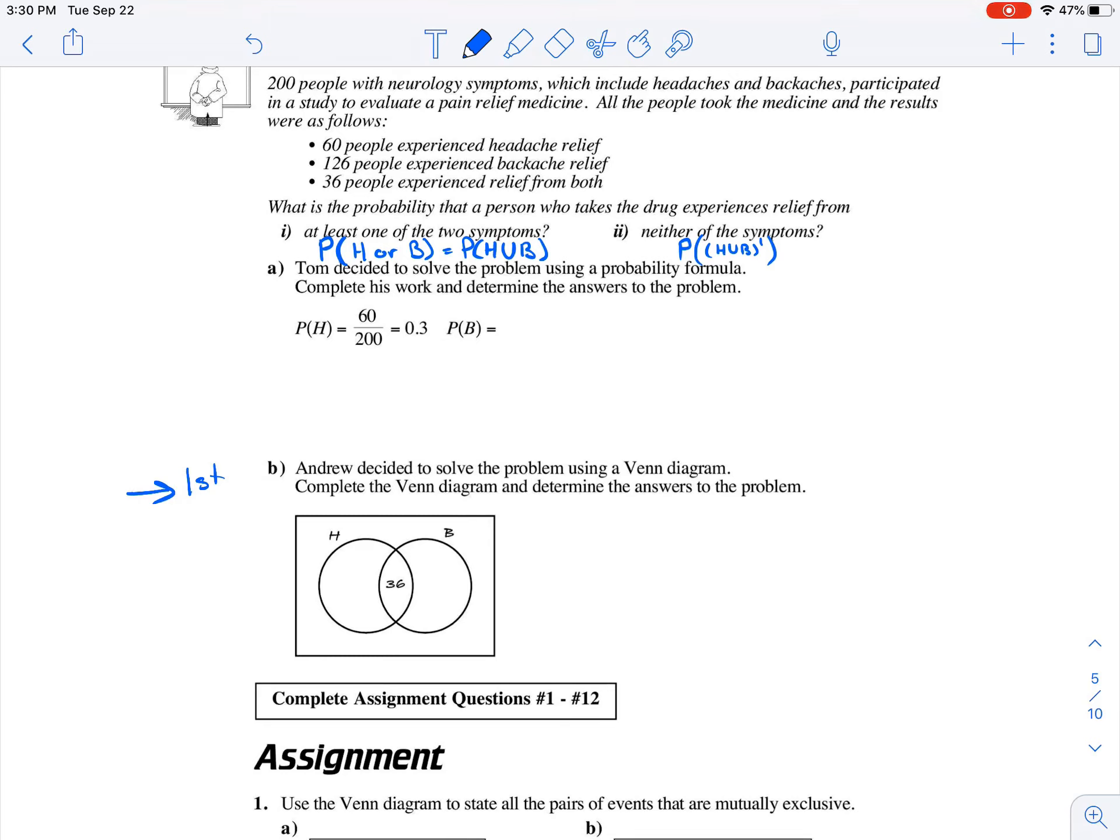Andrew decided to solve the problem using a Venn diagram. Complete the Venn diagram and determine the answer to the problem. We know this in total represents 200 people. They said that 36 people experienced relief from both, so we start in the middle and place a 36 in the middle. Now we'll work our way out, making sure we don't count anything twice.